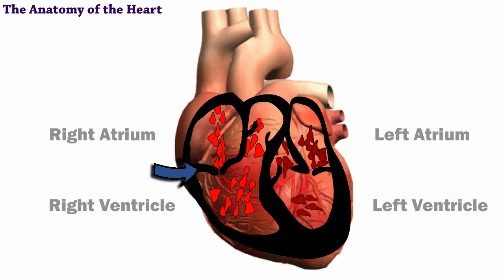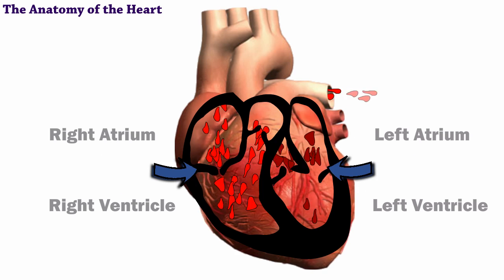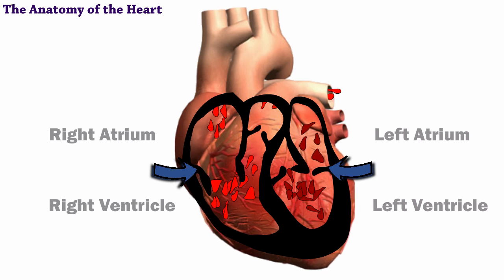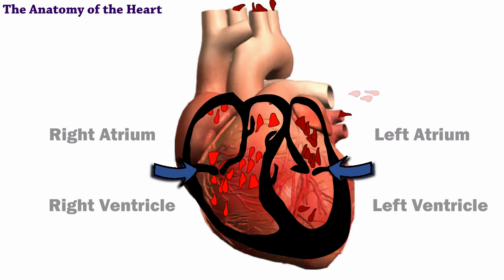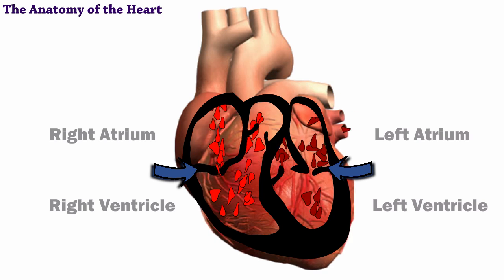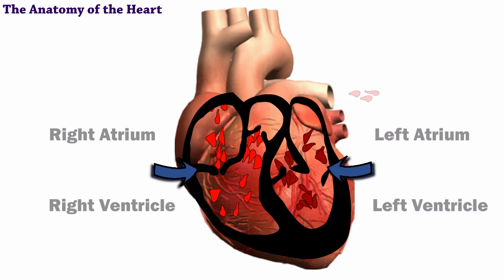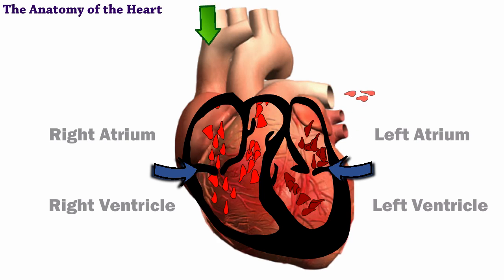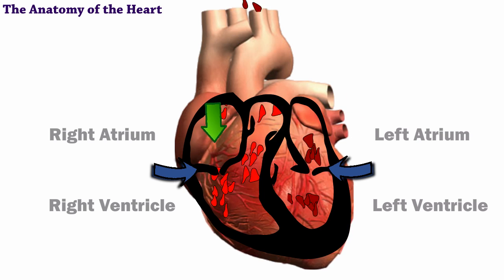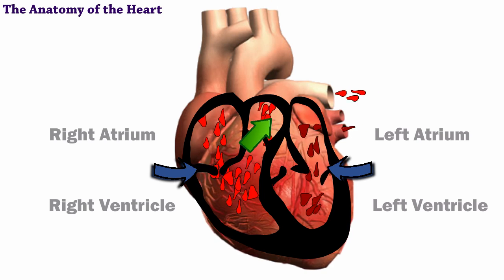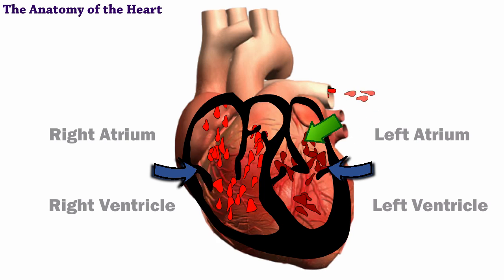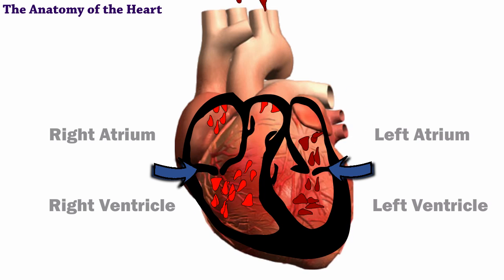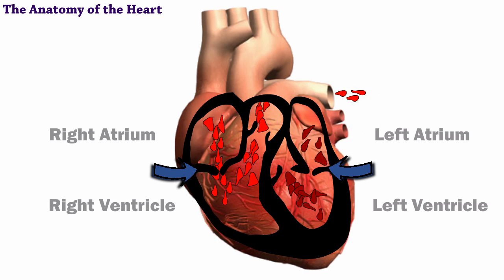Each chamber is separated by the cardiac muscle and valves. The valves effectively move blood throughout the heart by opening in only one direction. This forces the blood to pass through the chambers, into the lungs, and into your body without backing up or flowing backward.